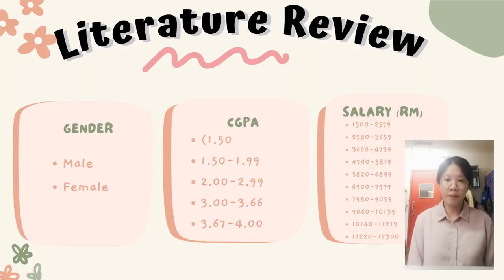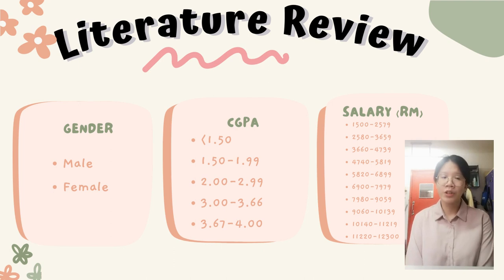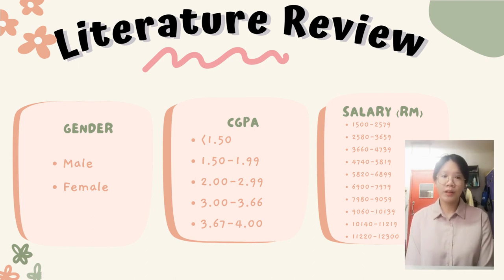The literature review covers gender — male and female. CGPA ranges include less than 1.5, 1.5 to 1.99, 2 to 2.99, 3 to 3.66, and 3.67 to 4. The salary ranges covered are: RM1,500 to RM2,579; RM2,580 to RM3,659; RM3,660 to RM4,739; RM4,740 to RM5,890; RM5,820 to RM6,899; RM6,900 to RM7,979; RM7,980 to RM9,059; RM9,060 to RM10,139; RM10,140 to RM11,219; and RM11,220 to RM12,300.